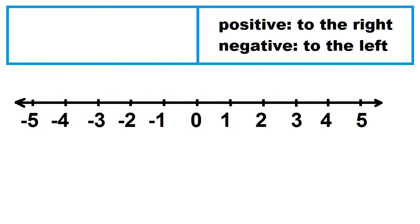On the number line, to add a positive integer, move to the right. To add a negative integer, move to the left.